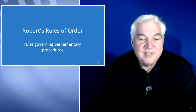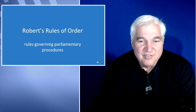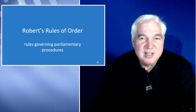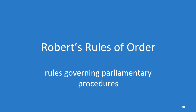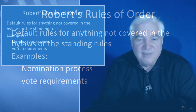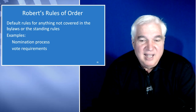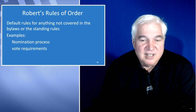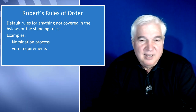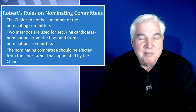The next section is specifically about what Robert's Rules says you need to do. The default for anything not covered in the bylaws, standing rules, or state law is Robert's Rules of Order. What they outline includes things like the nomination process and the voter requirements. Robert's Rules is adamant that the chair cannot be a member of the nominating committee — the chair is too influential and really should not be involved in that process.